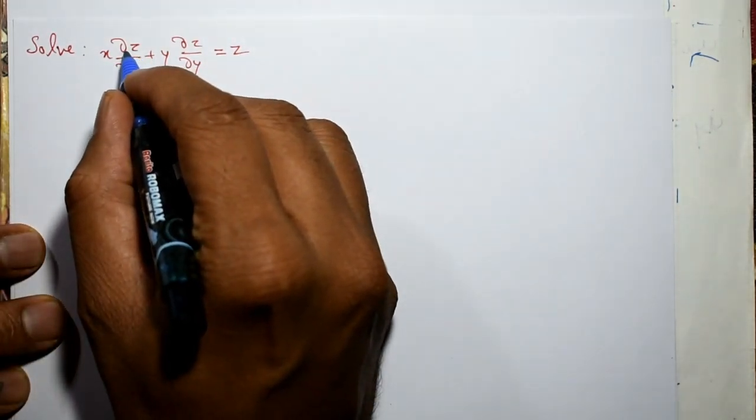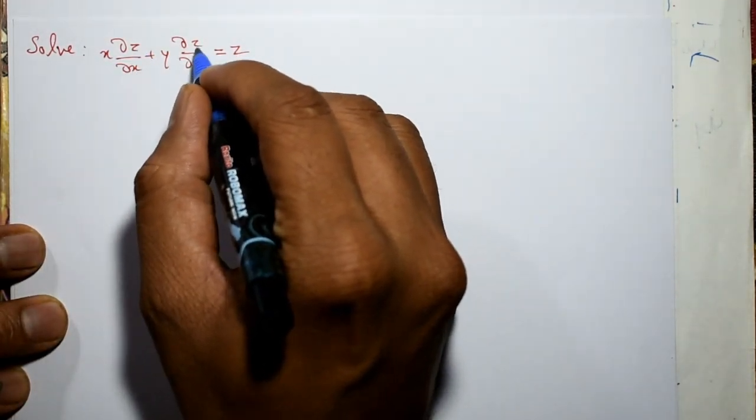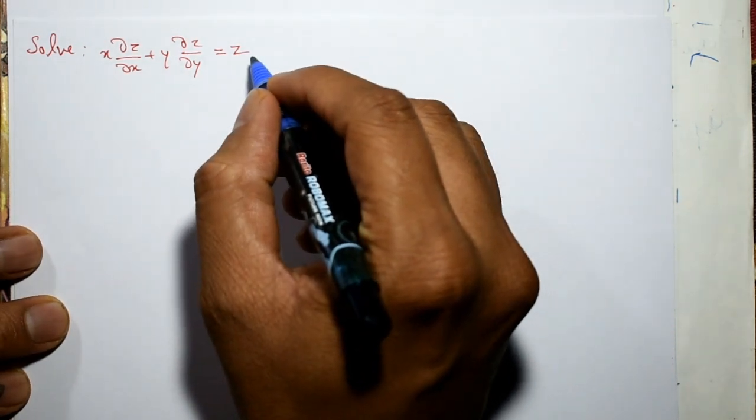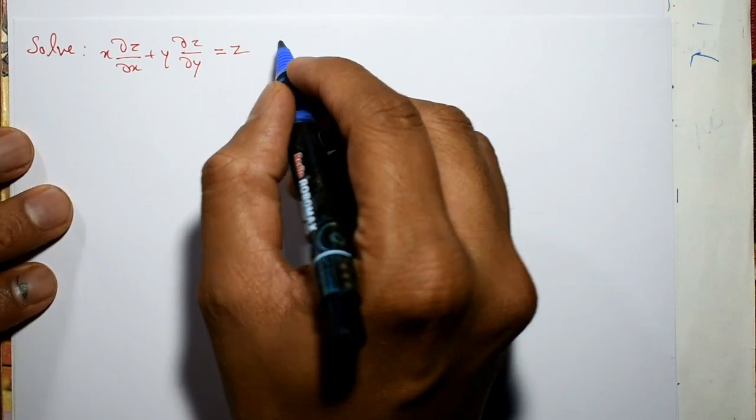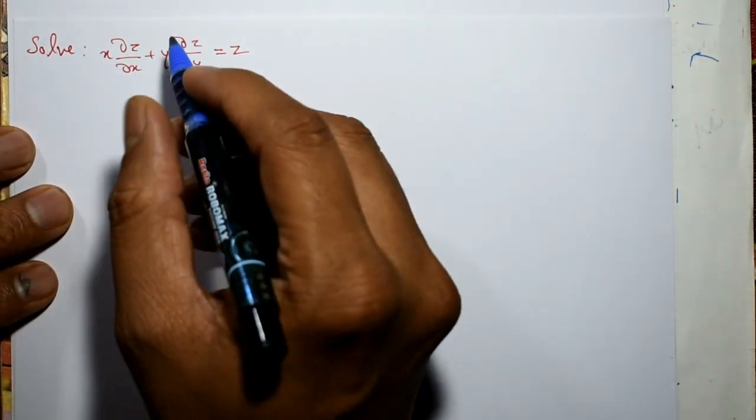Solve x times ∂z/∂x plus y times ∂z/∂y equals z. Now you find the general solution of the Lagrange's linear partial differential equation. This example is very simple.